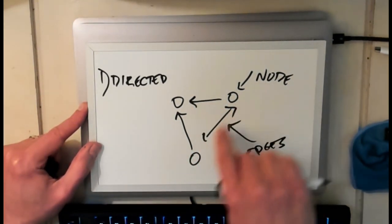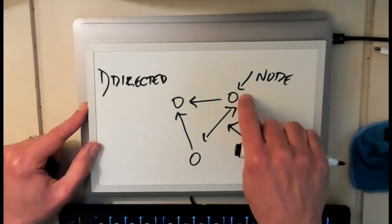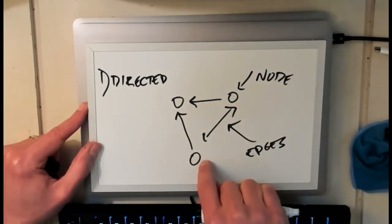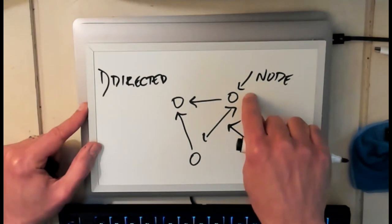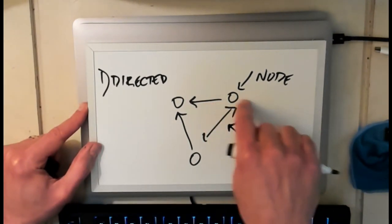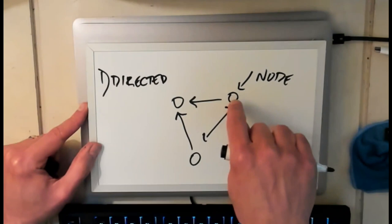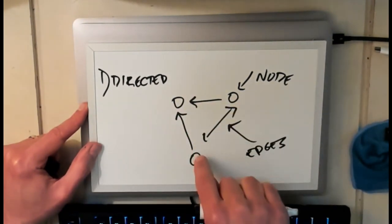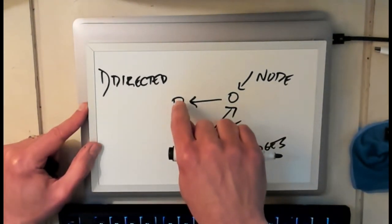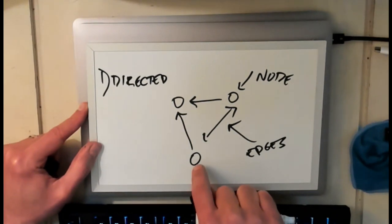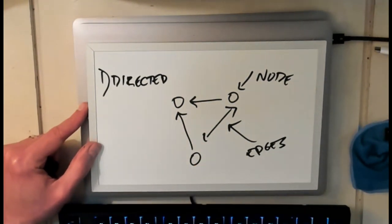So this edge goes in both directions. If I'm at this node I can move to this node and this node is connected to this node. But this node is connected to this node but this node is not connected back because I don't see an edge going in this direction. Similarly this node is connected to this node but there's no edge in the other direction. So this is now a directed graph.